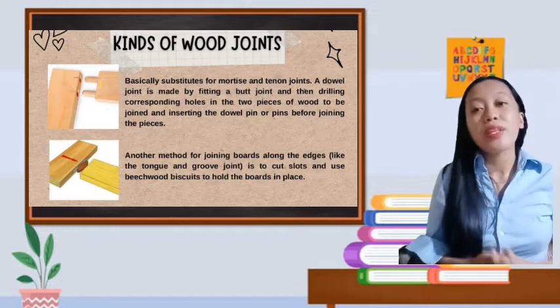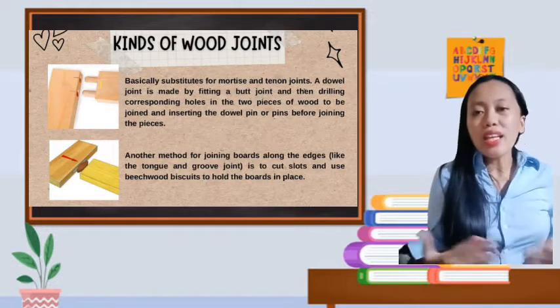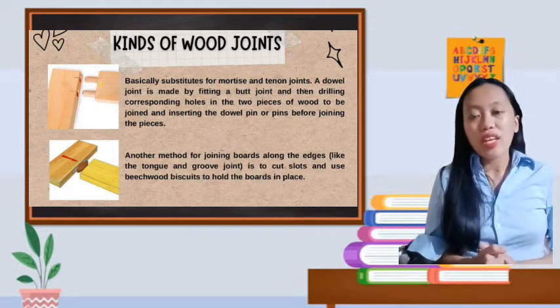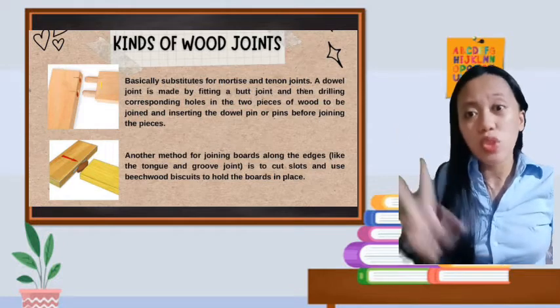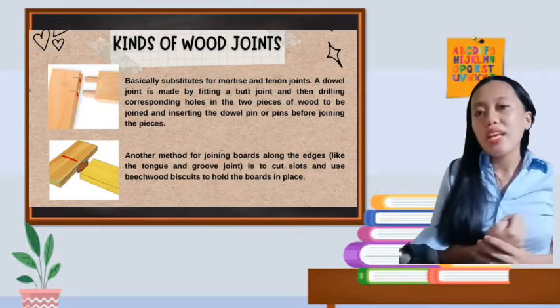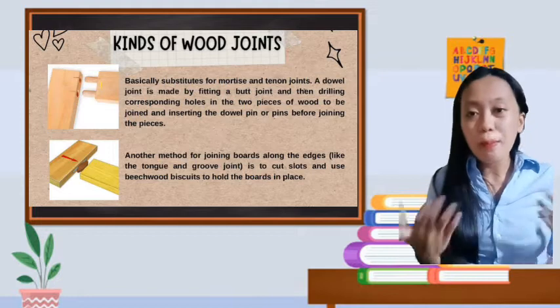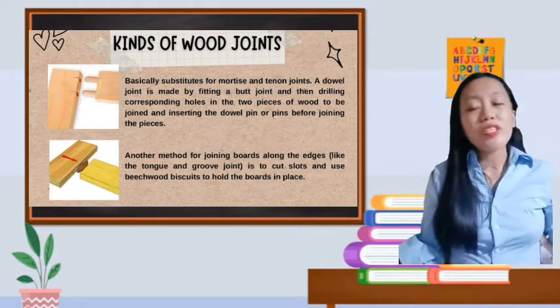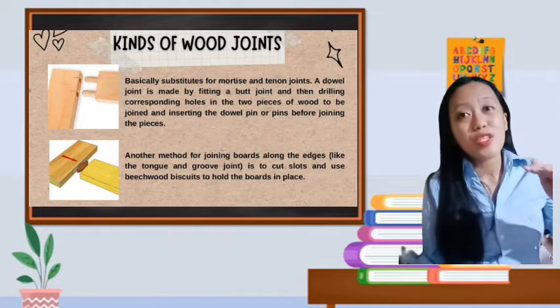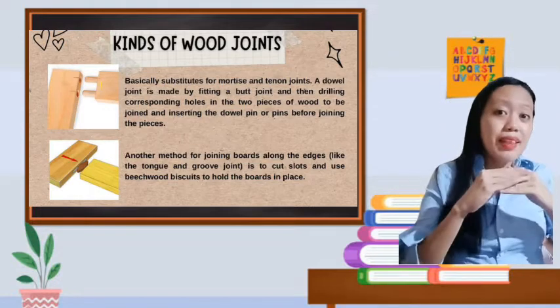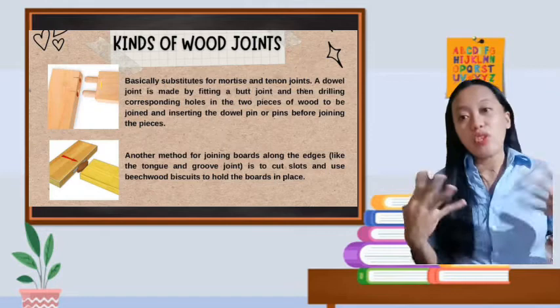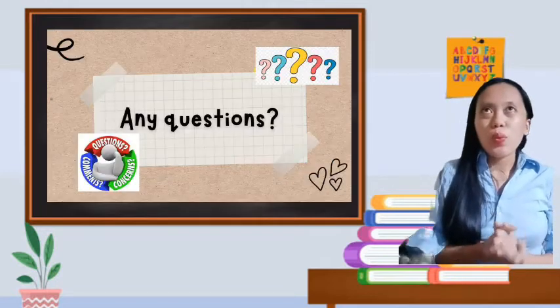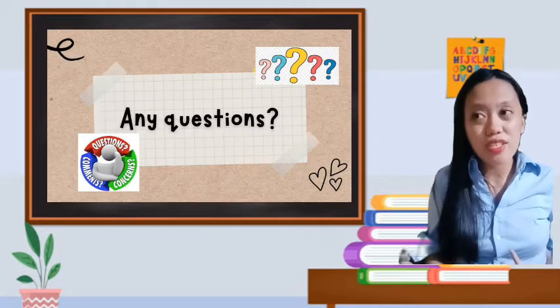And lastly, the biscuit joint. Another method for joining boards along the edges like the tongue and groove joint is to cut slots and use beechwood biscuit to hold the board in place. If you notice in the picture, from the word biscuit, it's like it has a filling to stick the two joints together. Do you have questions about any different types of wood joints? None so far.